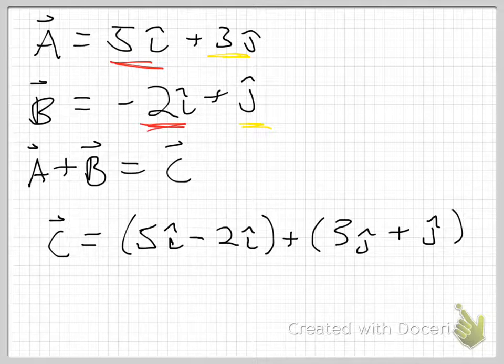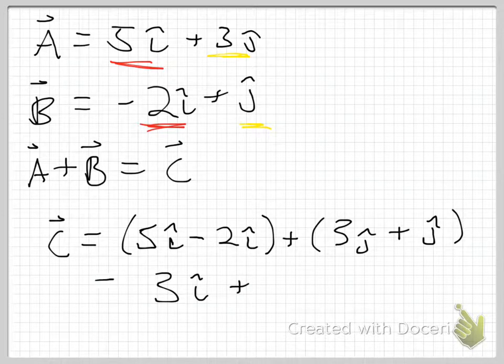I always do this. I say I'm going to skip it, and then I explain it. So I will really skip it. What I get out of this is 3î + 4ĵ. And that is my algebraic representation of the vector C, the resultant vector of A + B.